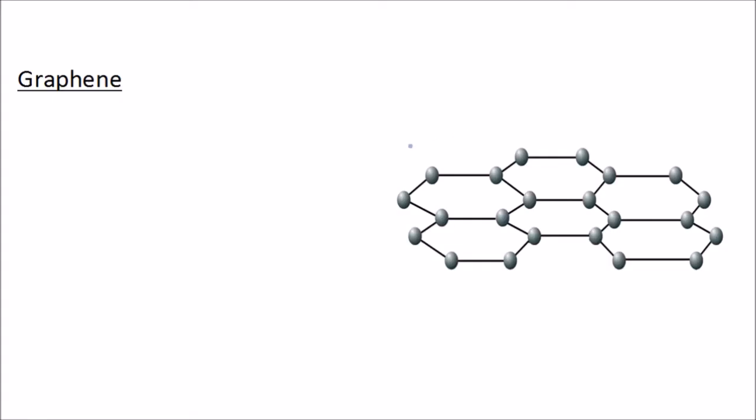Now we move on to something called graphene. Graphene is basically a single layer of graphite, one atom thick. And just like graphite, graphene is a very good conductor of electricity. And that's because of its delocalized electrons.